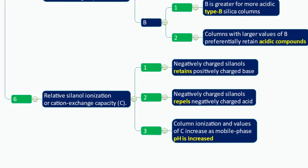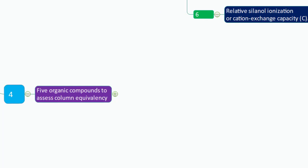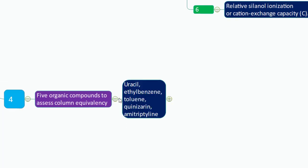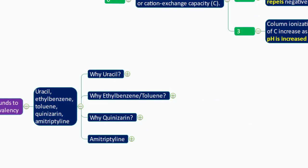These are the six parameters that determine column equivalency. The USP has selected five organic compounds to assess column equivalency: uracil, ethylbenzene, toluene, quinizarin, and amitriptyline. Let us understand why each of these compounds was selected.